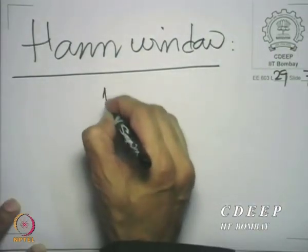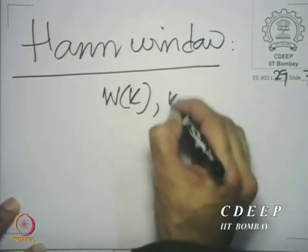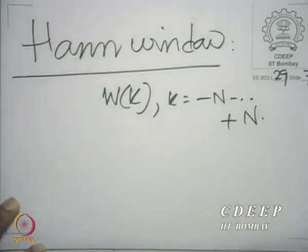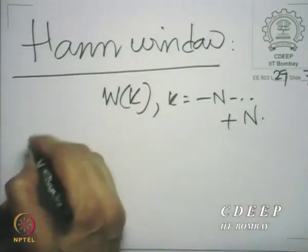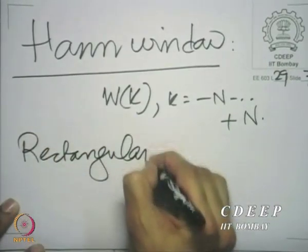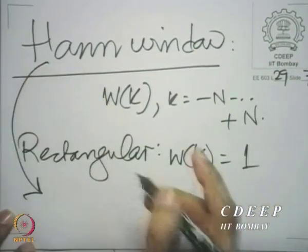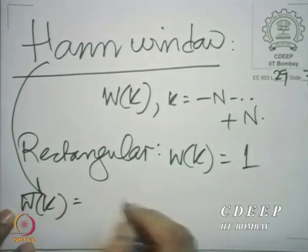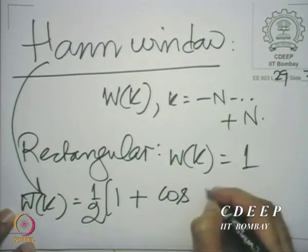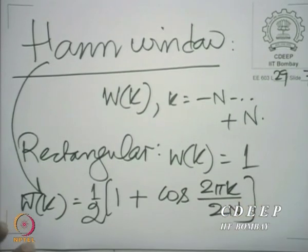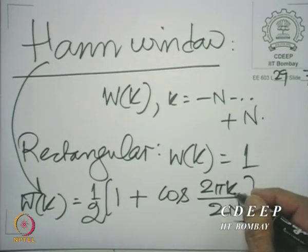In general, we shall specify a window to lie between k equal to minus N to plus N, and we will specify the window by the expression w(k). For example, the rectangular window is specified by w(k) equal to 1, and the Hann window is specified by w(k) equal to half times (1 plus cos(2πk / 2N)). We can easily see that at k equal to minus N, we have cos(π).